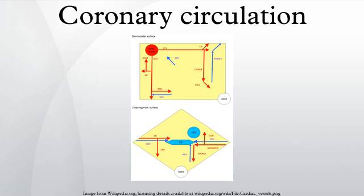If the posterior descending artery is supplied by the right coronary artery, then the coronary circulation can be classified as right dominant. If the posterior descending artery is supplied by the circumflex artery, a branch of the left artery, then the coronary circulation can be classified as left dominant.